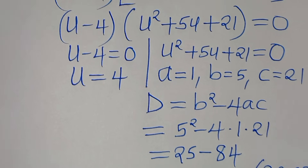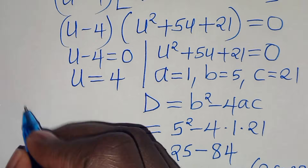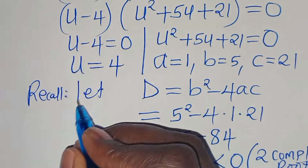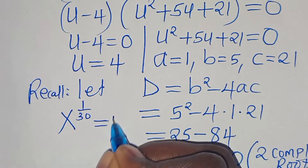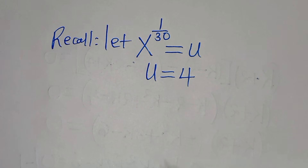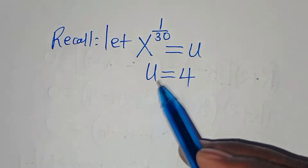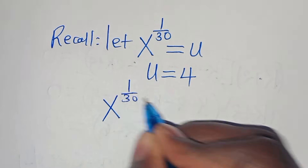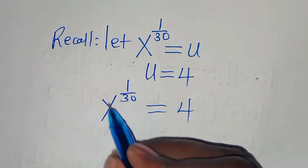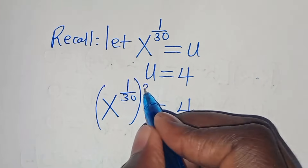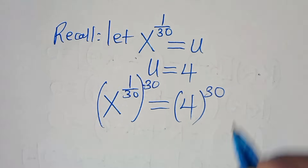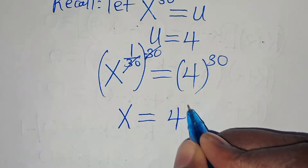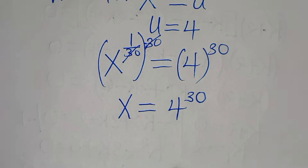Proceeding with u equals 4: since we set x to the power of 1 over 30 equal to u, we have x to the power of 1 over 30 equals 4. Raising both sides to the power of 30 gives x equals 4 to the power of 30. This is the value of x.